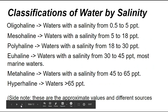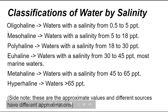Here are the classifications of water by salinity. Oligohaline is waters with salinity between 0.5 to 5 PPT. Mesohaline is waters with salinity from 5 to 18 PPT. Polyhaline is waters with salinity from 18 to 30 PPT.